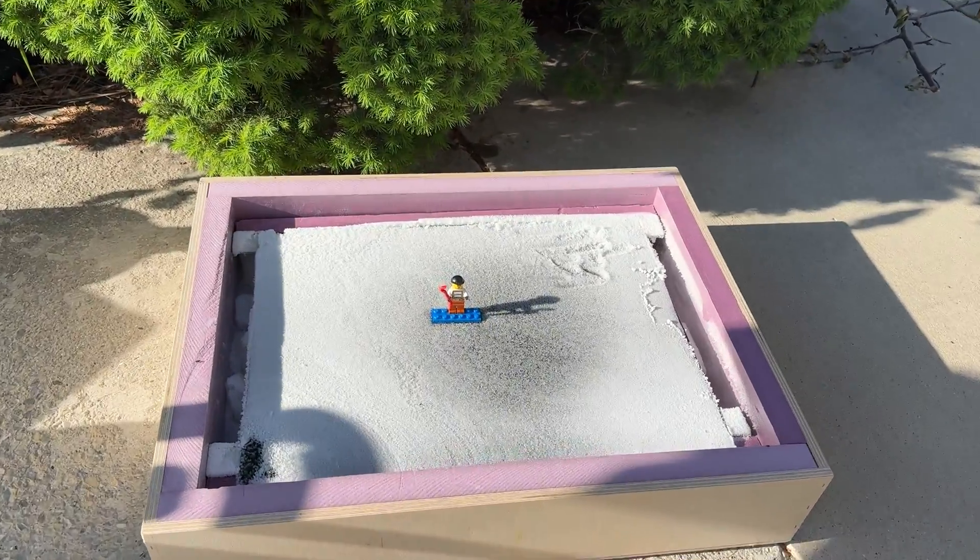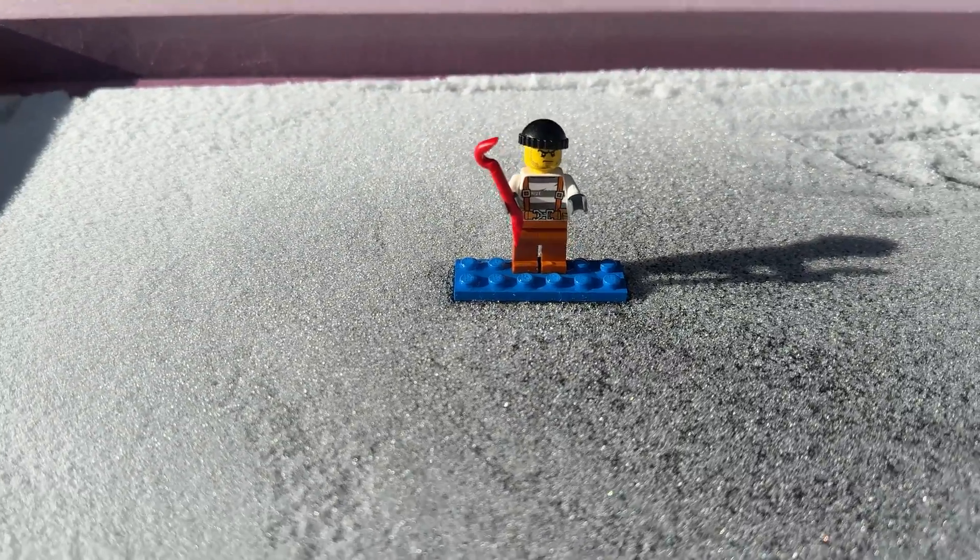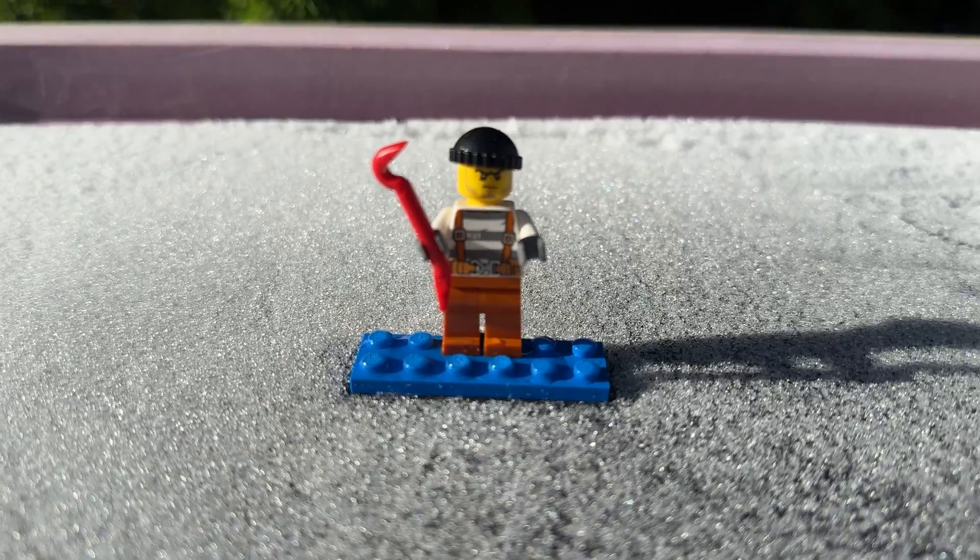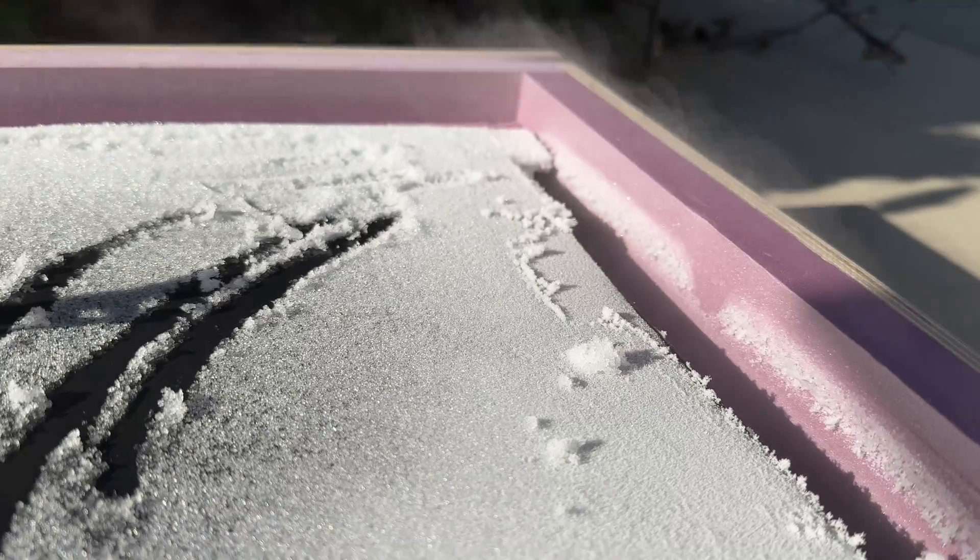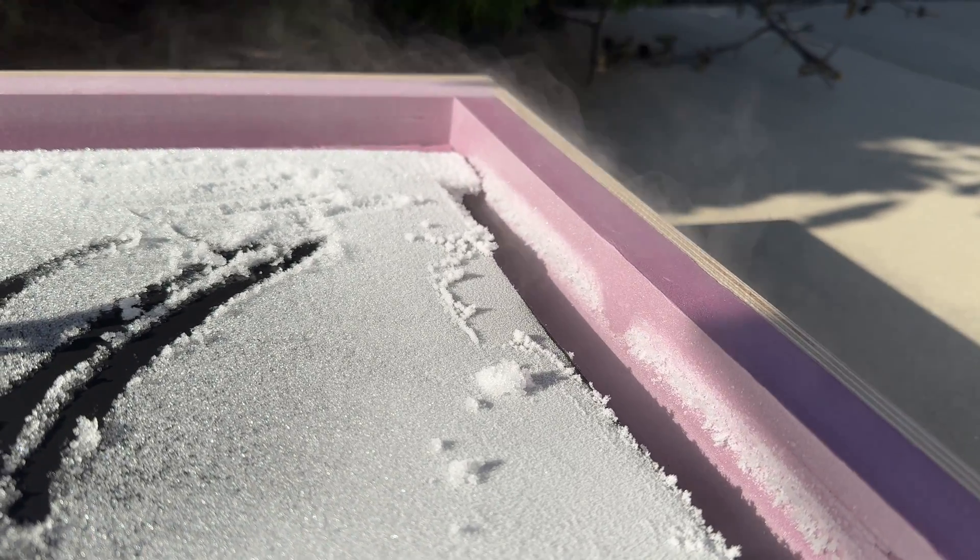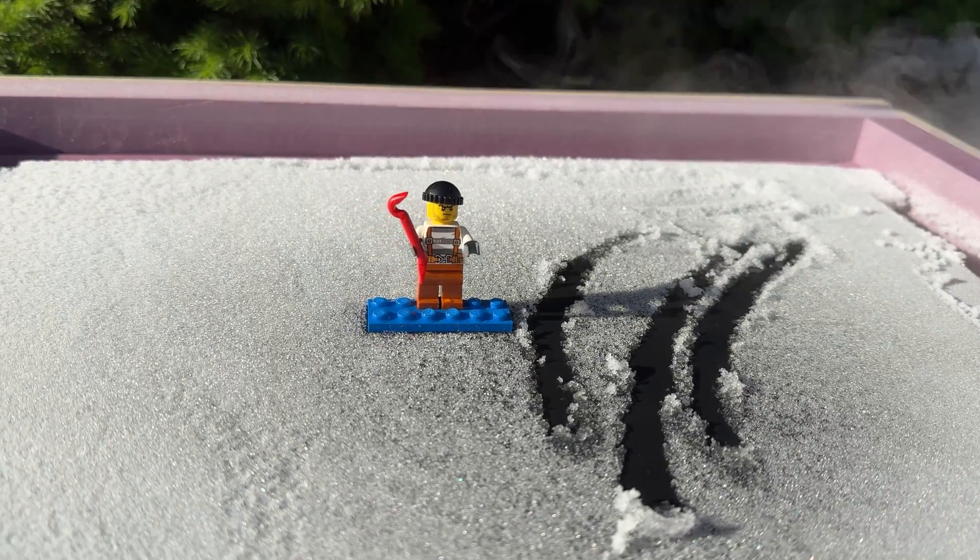The next day, the dry ice was still there, and the Lego crook stood proudly in a layer of frosty snow covering the metal plate. Our box was so well insulated, it kept everything freezing overnight. And the crook, he definitely had a story to tell. He had just become part of real science history.